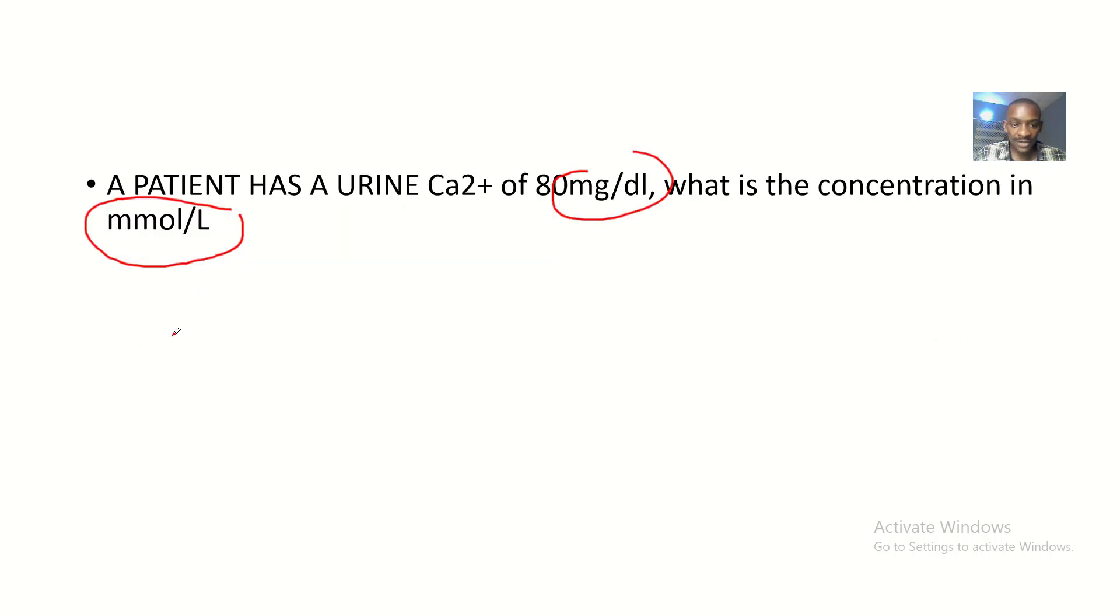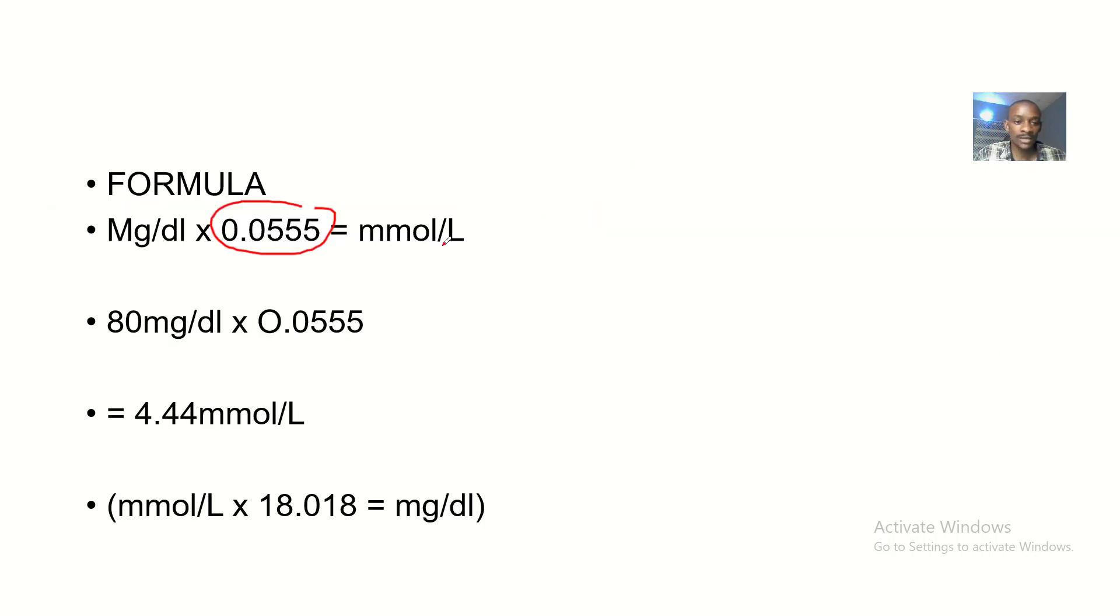The milligrams per deciliter value was 80, the urine calcium concentration of about 80 milligrams per deciliter.